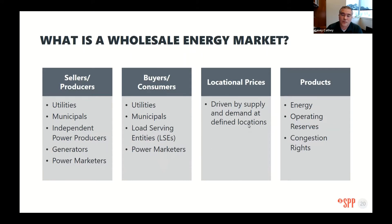The market also provides locational marginal prices, or LMPs. At every single pricing node — any load or generation on our transmission system — we calculate a price. It's locational because electrically, North Dakota is very different from Oklahoma City. If there is no transmission congestion, no bottlenecks on moving power from North Dakota to Oklahoma, you'd see the same LMP at both locations. The marginal piece is simply the cost of the next megawatt — what it takes to serve the next megawatt from an overall regional load obligation perspective.